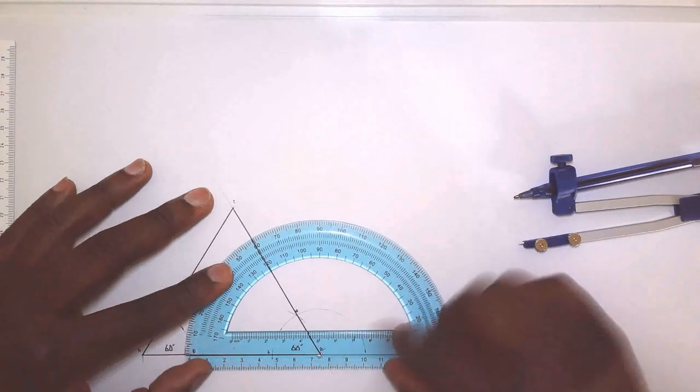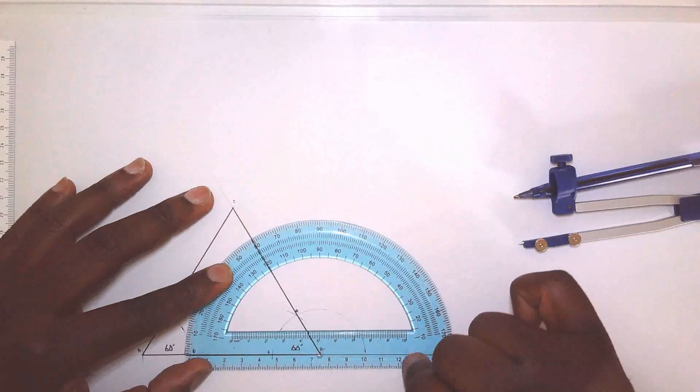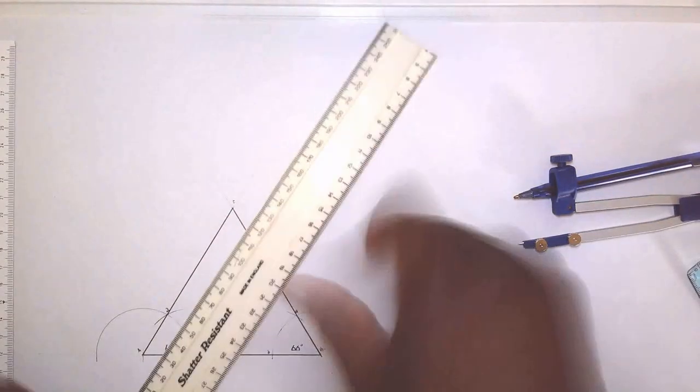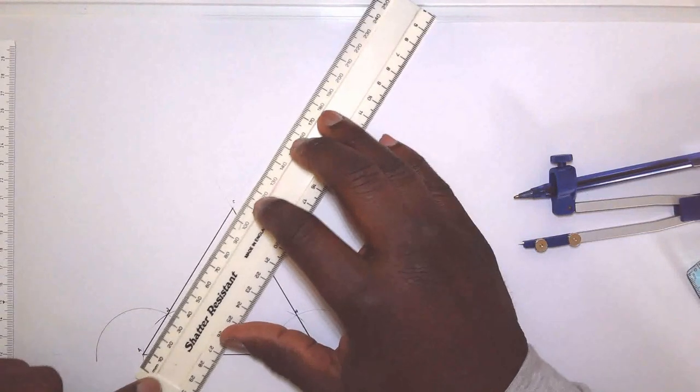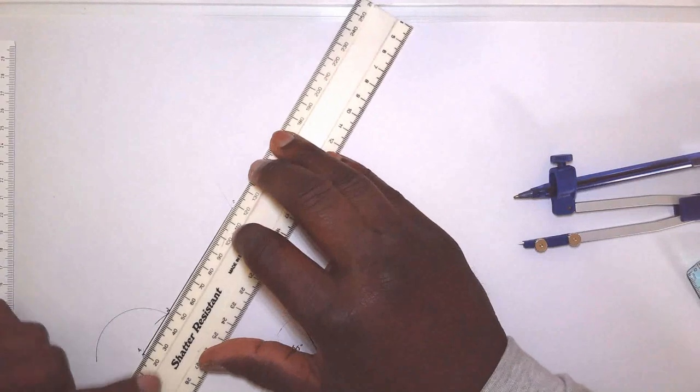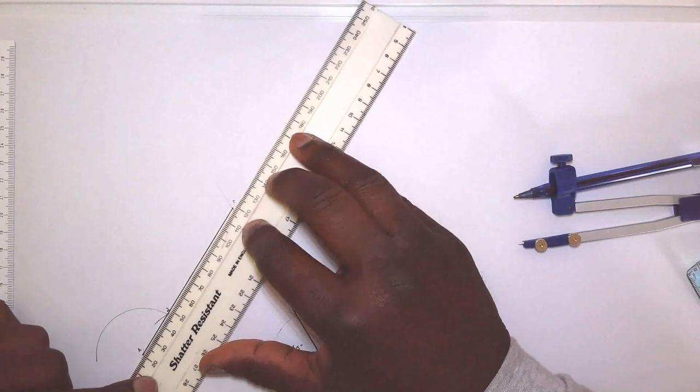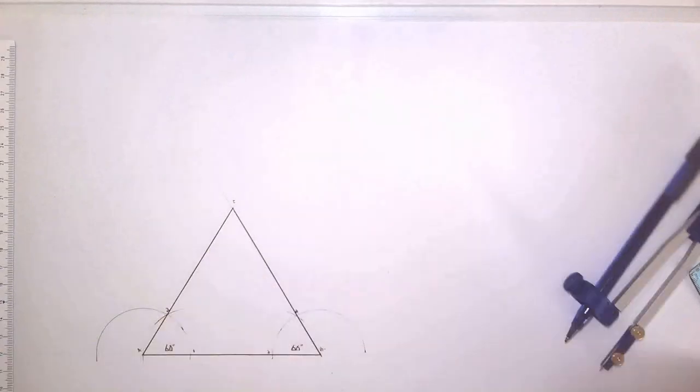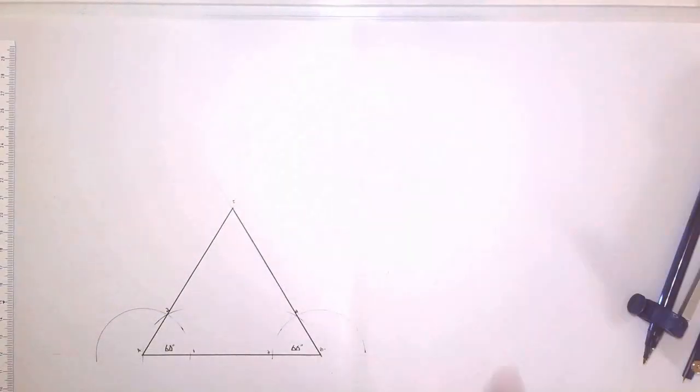This means our lengths should measure 100 millimeters. That is basically fine, and this is how we can construct an equilateral triangle using compasses only.